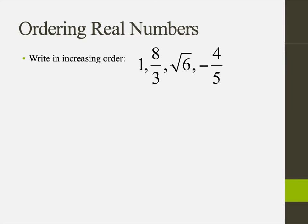Ordering real numbers — this can get a little tricky at times. I like to convert things to decimal first, and then it's really easy to see. So we look at 8 thirds — because obviously 1 is just 1 — 8 thirds is roughly 2.6 repeating. The square root of 6 is roughly 2.4, like 2.4494 so on and so forth. And negative 4 fifths — that's negative, and 4 fifths is 0.8. So negative 0.8.